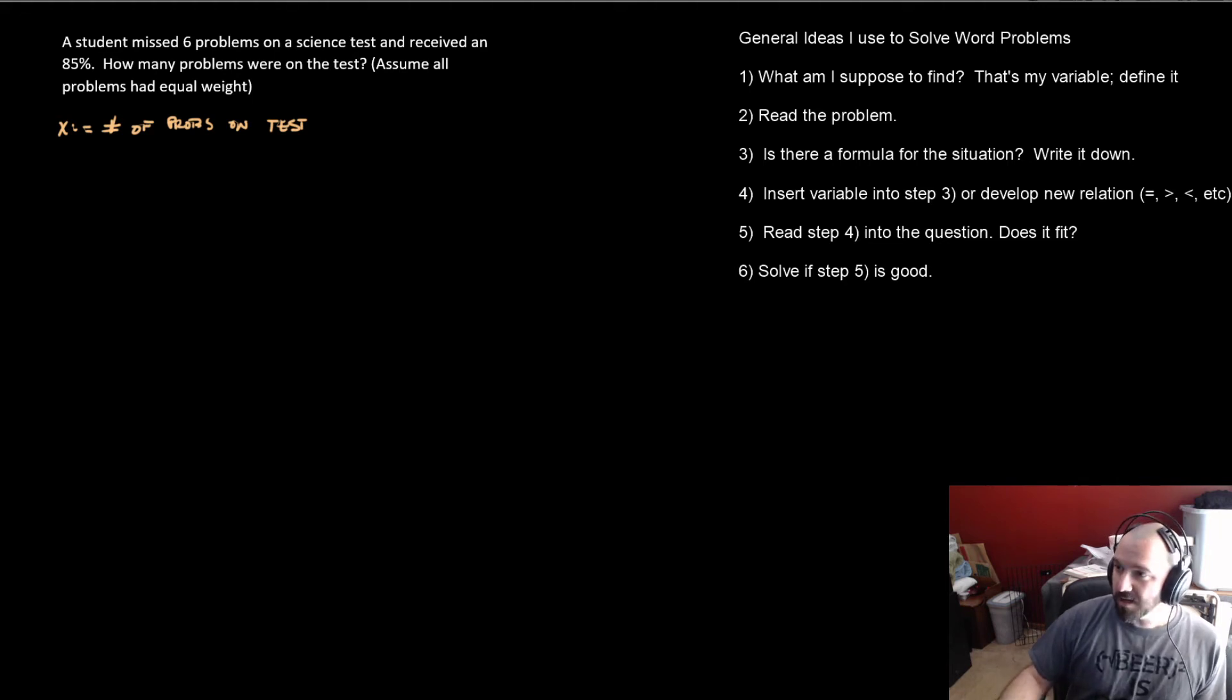So now let's take a look at this and say a student missed six problems on a test and received an 85%. So how many problems were on the test? Well, when you receive an 85%, that's how much you got correct. That's percent correct. So you can only get up to 100, which means that you must have missed whatever the difference is between them.